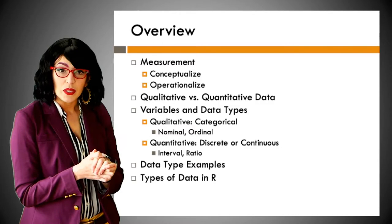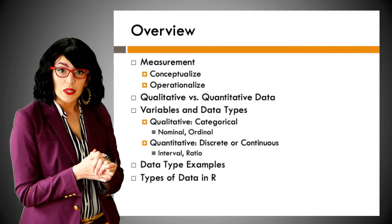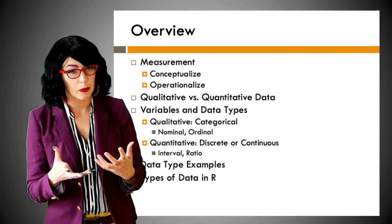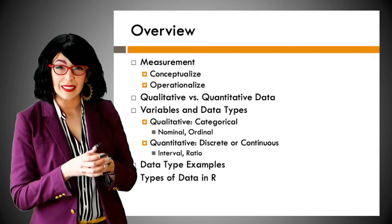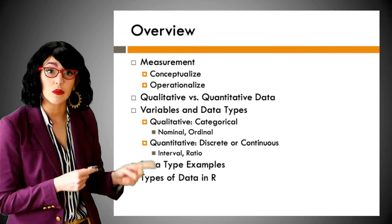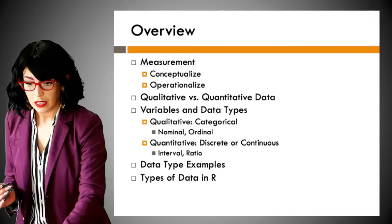Today we've talked about all of our independent and dependent variables — that's more of research and experimental design, which is very important. I hope you all take a research methods class one day and get more in-depth with that. Now we're going to talk about the different types of measurements and types of data, because there are actually quite a few. It's going to be very important to know these when we start working with data in R, because there are some things you can and cannot do with certain types of data.